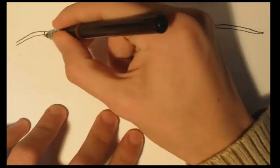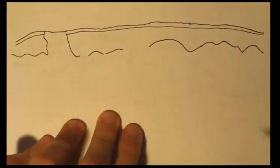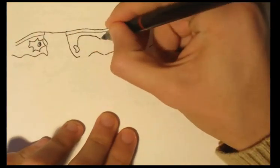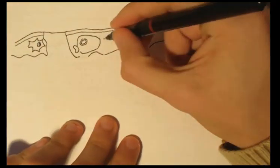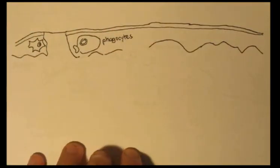This is about the inflammatory response of the innate immune system. Here we have the skin, and residing under the skin are phagocytes — tissue phagocytes.